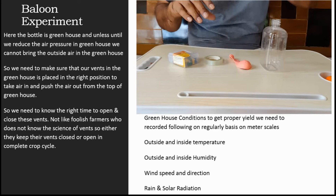There are a few meter readings which tell us when to open and when to close our vents. For example, if the humidity in the polyhouse is high, we need to open the vents so that outside air comes in and inside air goes out. When the CO2 level decreases in the polyhouse, we need to open the vents so outside air brings carbon dioxide to our plants.